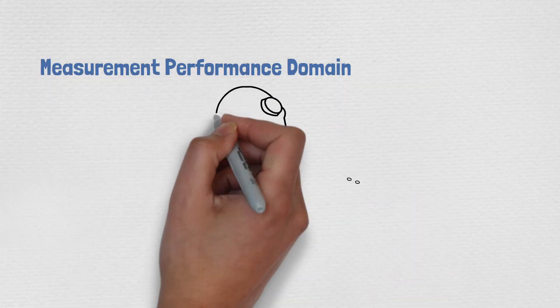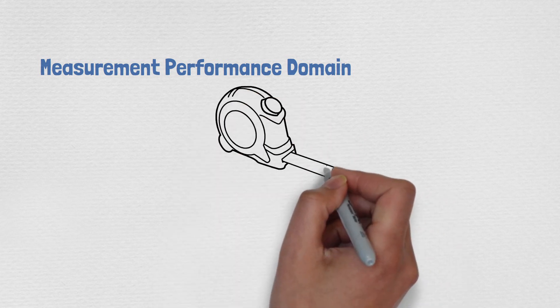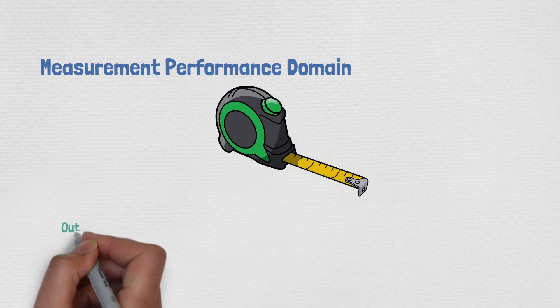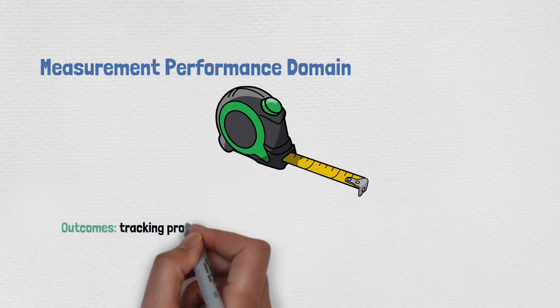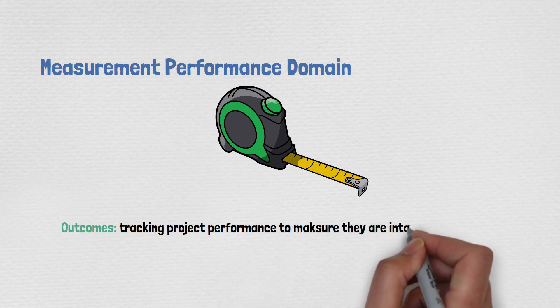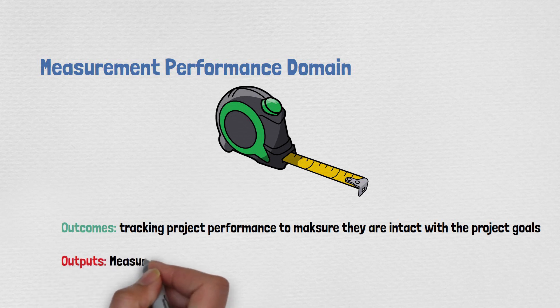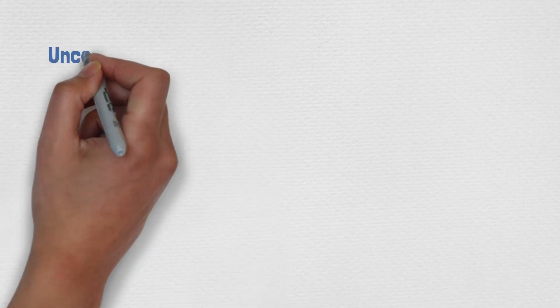The Measurement performance domain addresses the activities and functions associated with assessing project performance and taking appropriate actions to maintain acceptable performance levels. The outcome is tracking project performance to ensure project goals are intact. From PMBOK 6, it was all about quality measurements — measuring performance against quality.